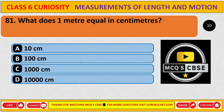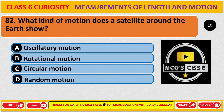What does 1 meter equal in centimeters? What kind of motion does a satellite around the Earth show? The correct answer is C, circular motion.